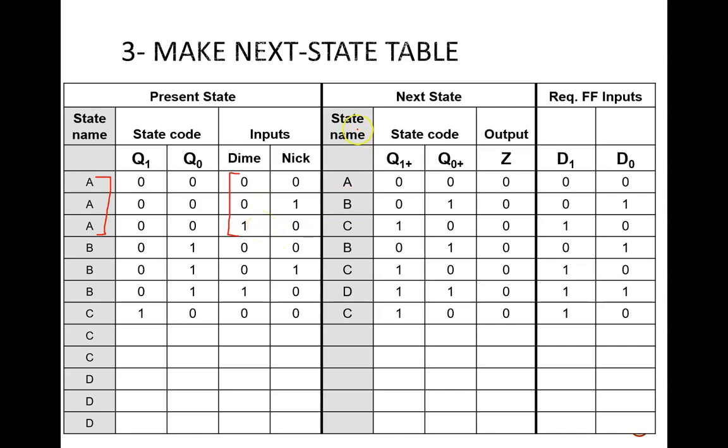To obtain the next state name, I simply follow the state diagram. For example, when starting at B and depositing no coins, the memory stays at state B. Once the next state names are entered, the next state codes are filled in, following the same naming convention. 0, 0 for A, 0, 1 for B, 1, 0 for C, and 1, 1 for D.